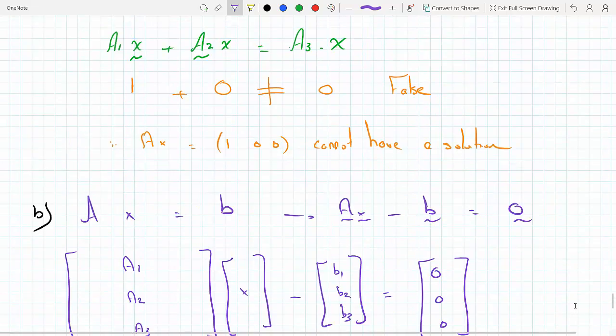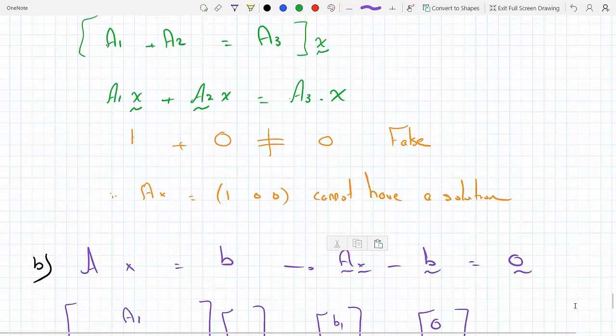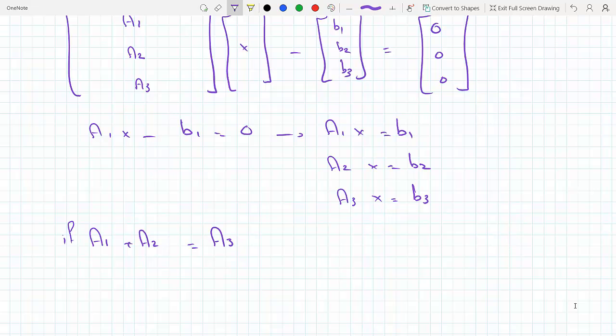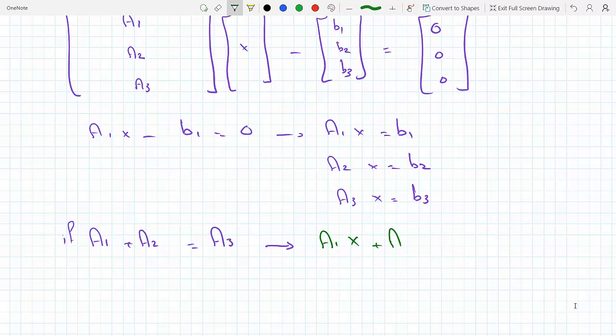But we know from the given that row 1 plus row 2 has to equal row 3. Okay, so if A1 plus A2 has to equal A3, I could do the same exact thing I did in the previous part. I could post-multiply by X each one of them. So if I do that, I will get A1 X plus A2 X has to equal A3 X. But A1 X is b1, and A2 X is b2, has to equal A3 X is b3. So that means for this to be a solution, b1 plus b2 has to add up to b3.